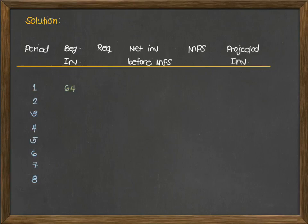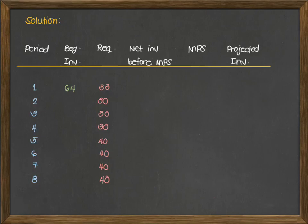So going back: beginning inventory is 64, your requirement is 30 for periods 2, 3, and 4. For periods 5 to 8, since the forecast is given for all 8 periods, we put 40 units for weeks 5 through 8. The net inventory before MPS is just the difference between your beginning inventory and your requirement — so 64 minus 33 equals 31.